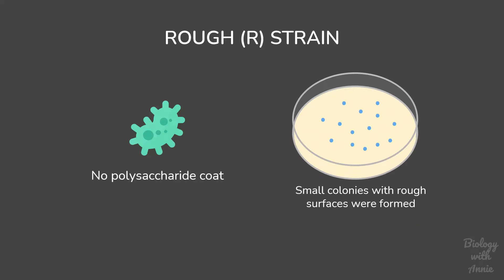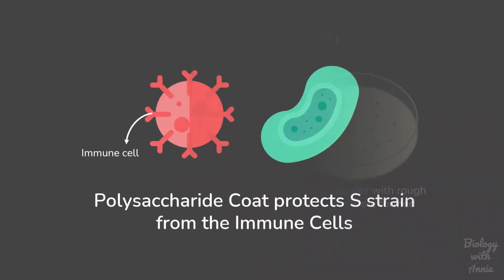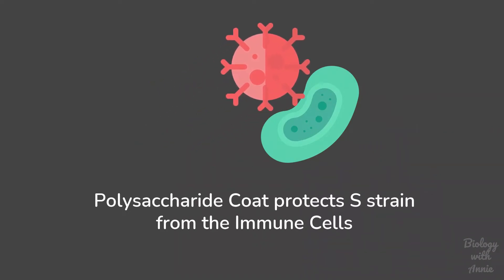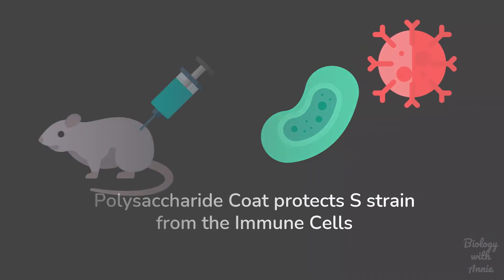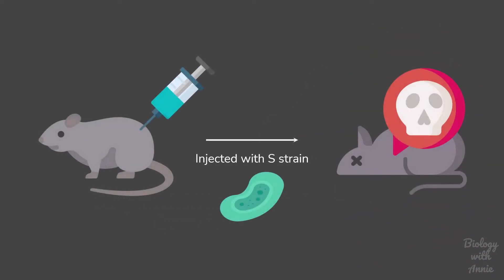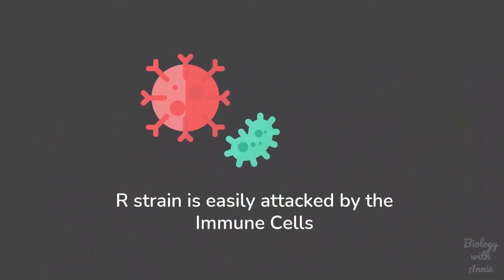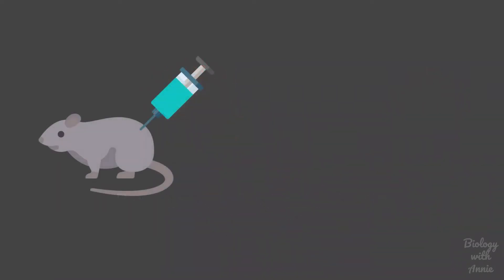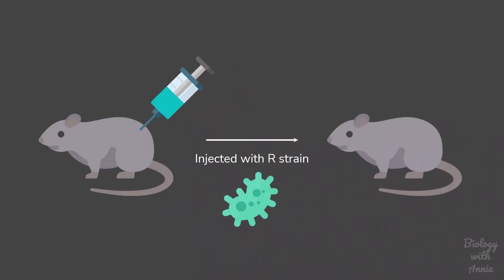Not having the polysaccharide coat is a big disadvantage for the bacterium. In the S strain, the polysaccharide coat protects the bacterium from the host immune system. When Griffith injected a mouse with the S strain, the mouse developed pneumonia and eventually died. Since the R strain is not protected by the polysaccharide coat, it is easily captured and destroyed by host immune cells, so when a mouse is injected with the R strain it does not develop pneumonia and remains healthy.